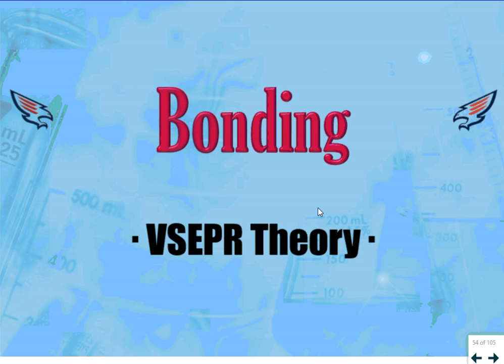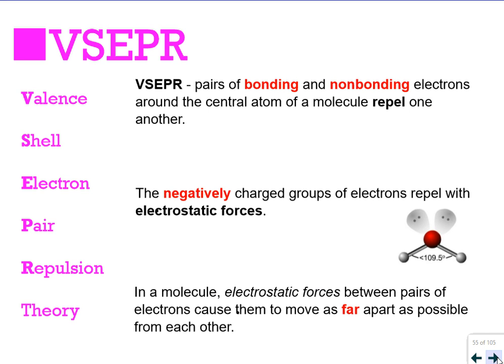Hello and welcome to Bonding Valence Shell Electron Pair Repulsion Theory. Let's kick it off talking about the theory itself. People call it VSEPR. That's because VSEPR is hard to say.